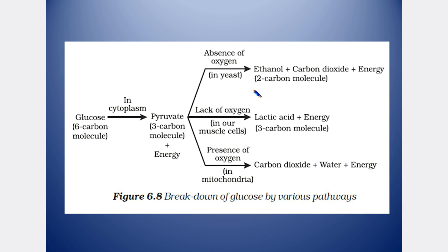Here is a flow chart of the three pathways: aerobic, anaerobic, and the alternative pathway. The first step is glucose converting to pyruvate. In the absence of oxygen, anaerobic respiration occurs — ethanol, carbon dioxide, and energy are released. In the presence of oxygen, aerobic respiration occurs in the mitochondria, producing carbon dioxide, water, and energy. In muscle cells, the alternative pathway produces lactic acid and energy.